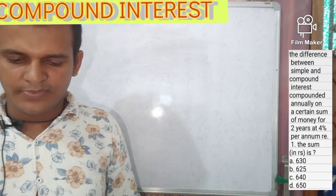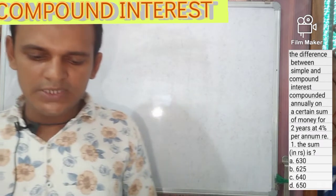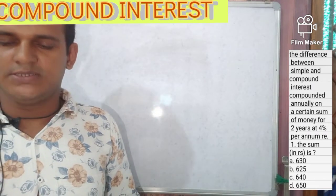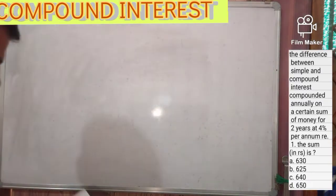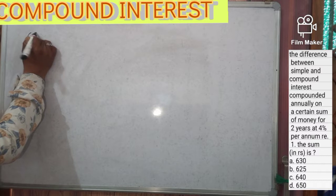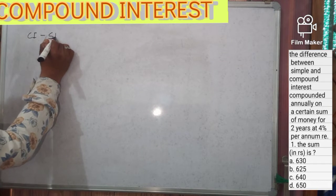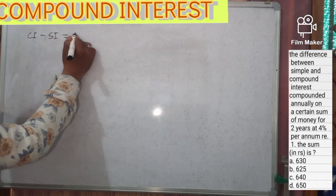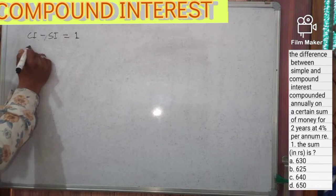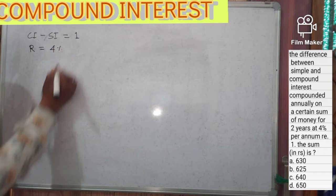The given data is: the difference between compound interest and simple interest equals rupees one. The sum is in rupees each. The rate of interest is equal to four percent.